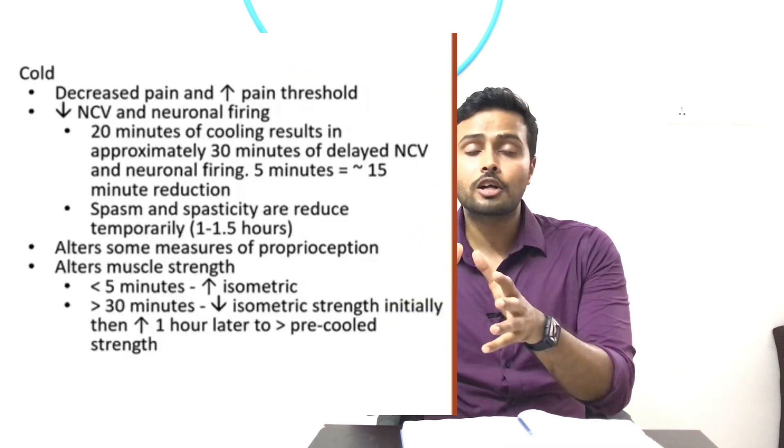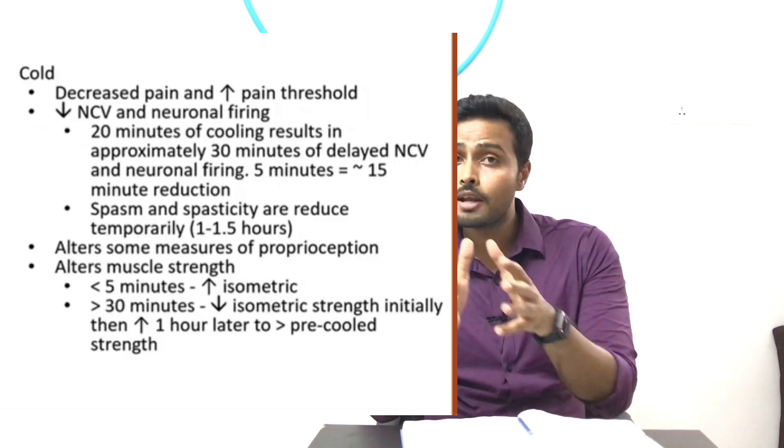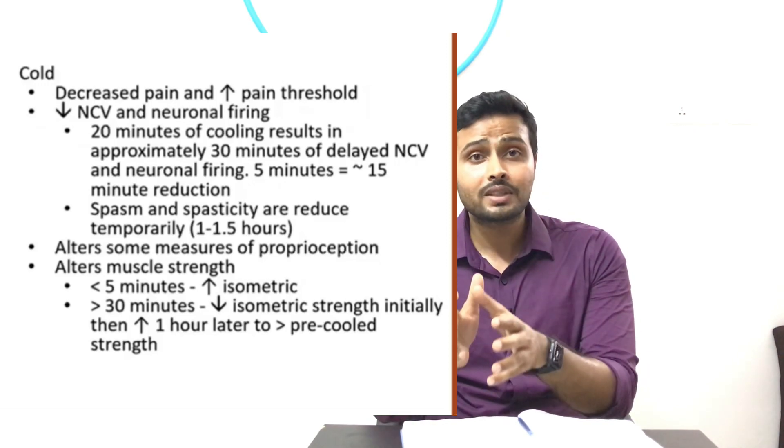Remaining option B is ice pack to calf for 20 minutes. We sometimes think: why give an ice pack? We've seen ice used to improve muscle contraction in flaccid stages, but that is quick icing. Quick icing can increase muscle tone, but if you give icing continuously for a minimum of 20 minutes, you can work on the pain gate theory and reduce pain for the patient.